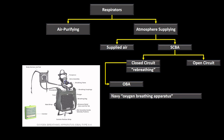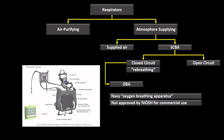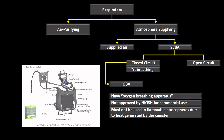One closed-circuit SCBA the chapter covers is the OBA — the Navy's Oxygen Breathing Apparatus. It is activated by exhaled air, which triggers a chemical reaction (a candle inside) that produces oxygen. These get very hot and cannot be used in a flammable atmosphere, cannot be handled with bare hands once activated. They are not NIOSH-approved for commercial use and are now largely obsolete, replaced in the fleet.